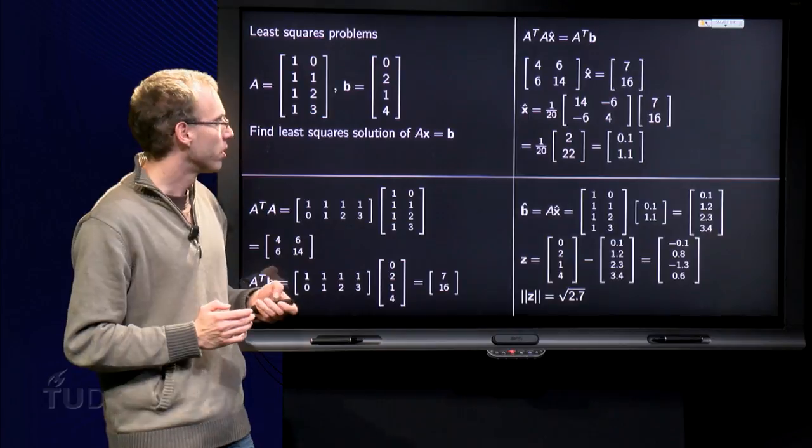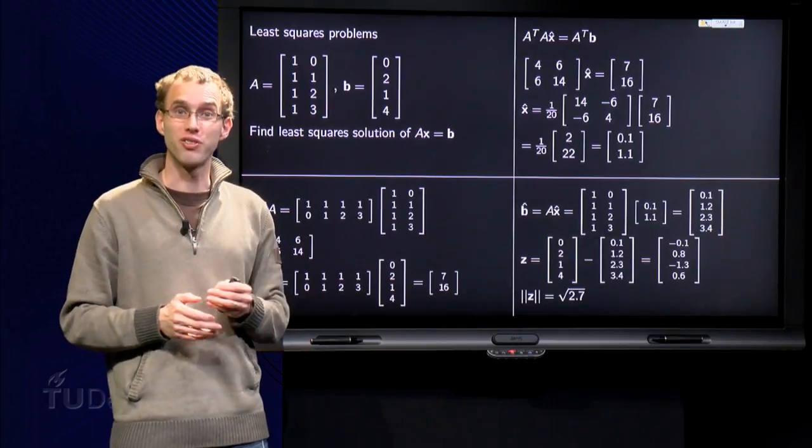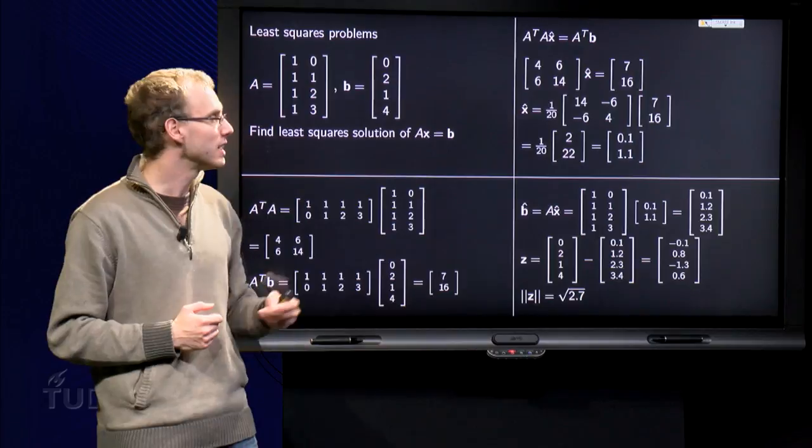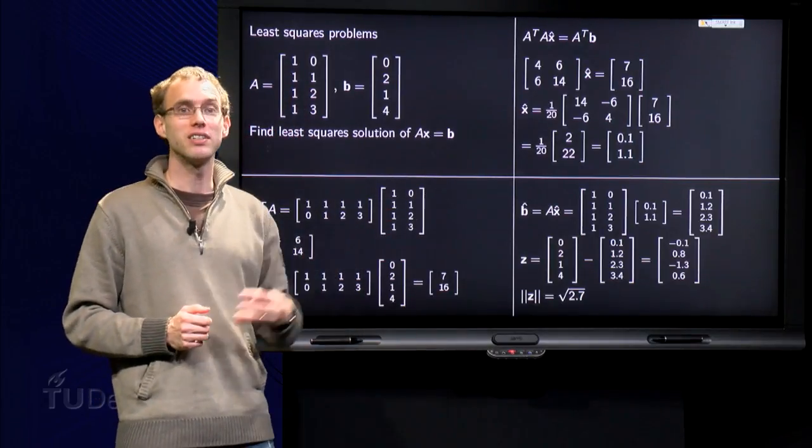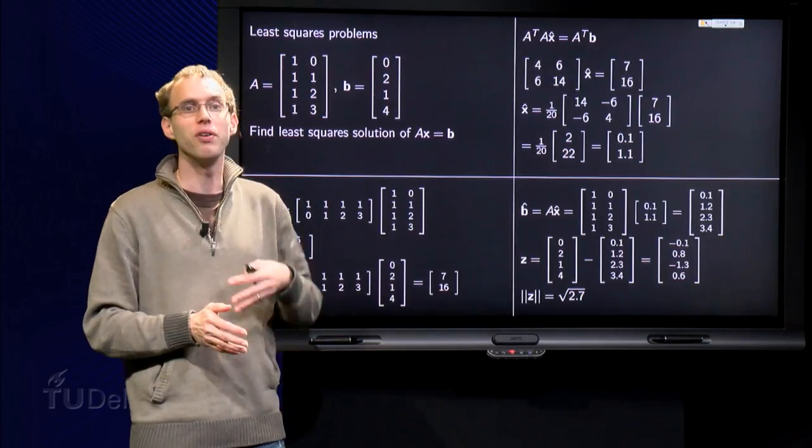We also want to compute our least squares error to know how good our solution is. For that we need b hat. In the other method we had b hat immediately, but now we have to compute it.